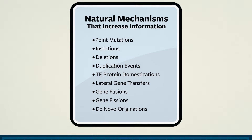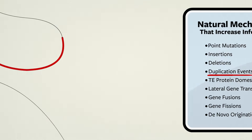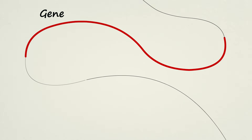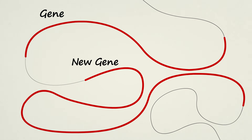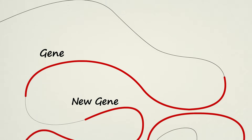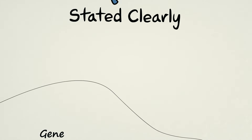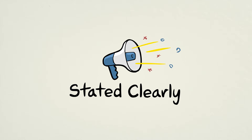In our next film, we'll look at a special type of mutation called a duplication event. These mutations dramatically increase the length of the genetic code and can even give rise to entirely new genes. Until then, I'm John Perry, and these were just a few simple examples of how new genetic information evolves — Stated Clearly.